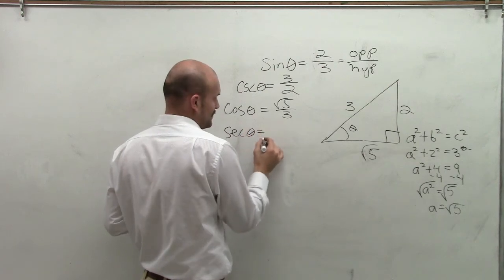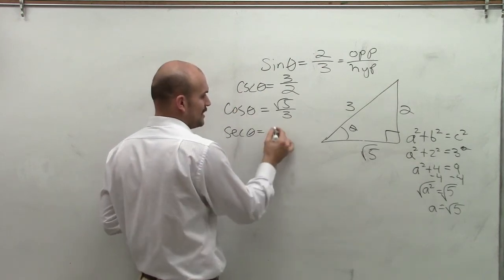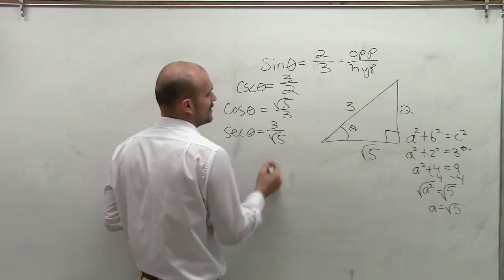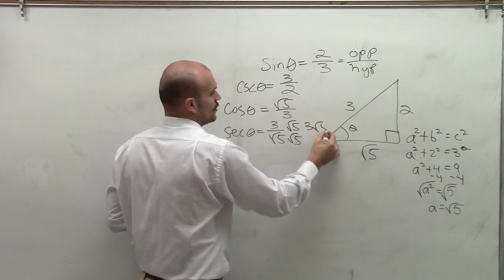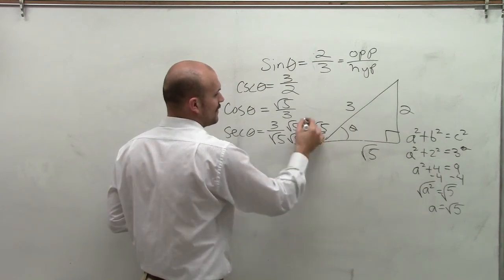Now, when I deal with the secant of theta, which is the reciprocal of cosine, I'm going to have 3 over square root of 5. When I rationalize the denominator, I get 3 radical 5 over 5.